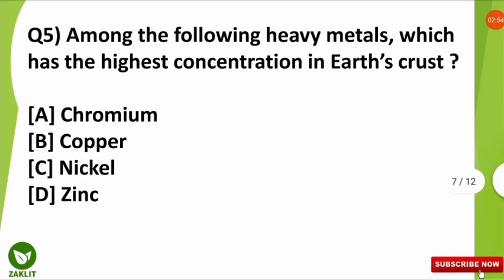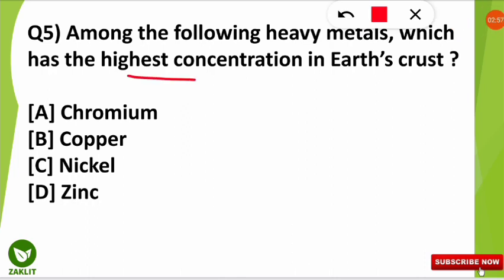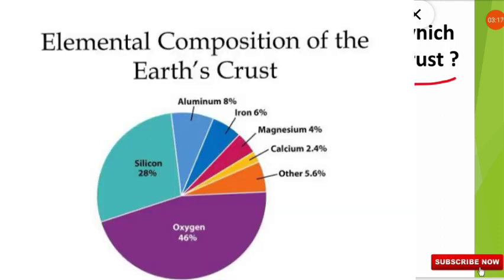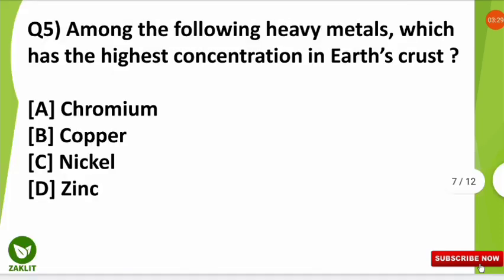The fifth question is: among the following heavy metals, which has the highest concentration in our earth's crust? Many of you were confused, and the correct option is A — chromium has the highest concentration among these four heavy metals. Technically, the maximum composition in the earth's crust is oxygen, followed by silicon, aluminum, iron, magnesium, and calcium.